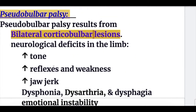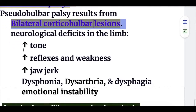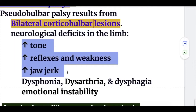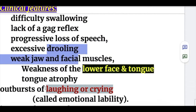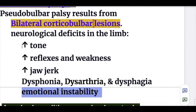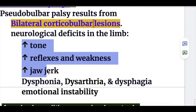Pseudobulbar palsy results from bilateral corticobulbar (supranuclear) lesions, producing upper motor neuron features: increased tone, increased reflexes, weakness, dysphonia, dysarthria, dysphagia, and emotional instability with outbreaks of laughing or crying. In contrast, bulbar palsy shows decreased tone and reflexes with muscle weakness.